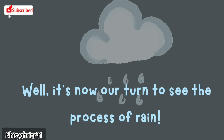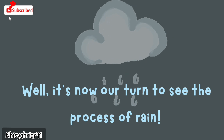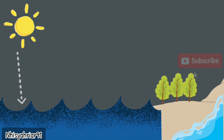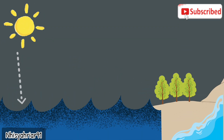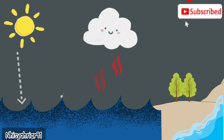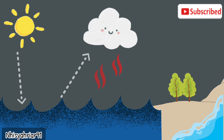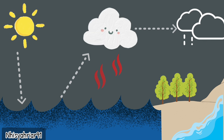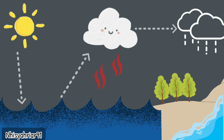Now it's our turn to see the process of rain. The first step is the sun heats the oceans. Then the water evaporates and rises into the air. The water vapor cools and condenses to become droplets, which form clouds.